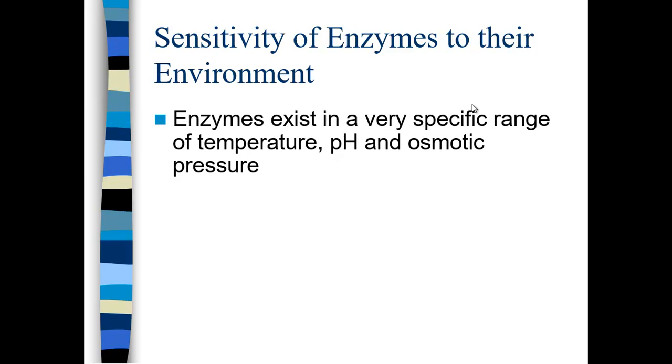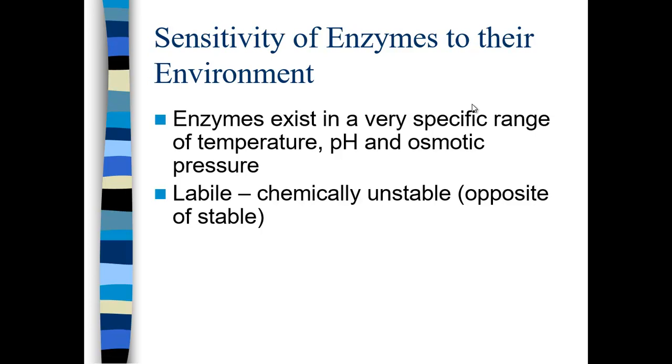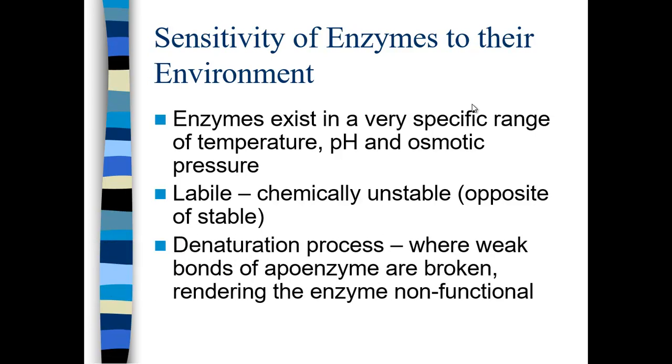Enzymes have a very fragile structure and are very sensitive to their environment. They're suited for the environment that the organism has adapted to live in, but if you take enzymes out of that environment, they tend to fall apart. They exist at a very specific range of temperature, pH, and osmotic pressure. The chemical term for a sensitive or unstable enzyme is labile — a labile enzyme is chemically unstable. In the denaturation process, when an enzyme denatures it loses function. The weak bonds of an apoenzyme are broken, the enzyme stretches out, and that renders the enzyme nonfunctional.